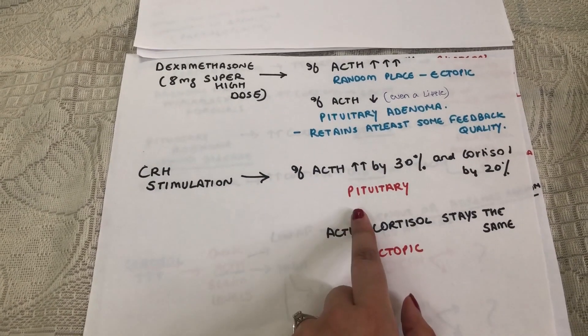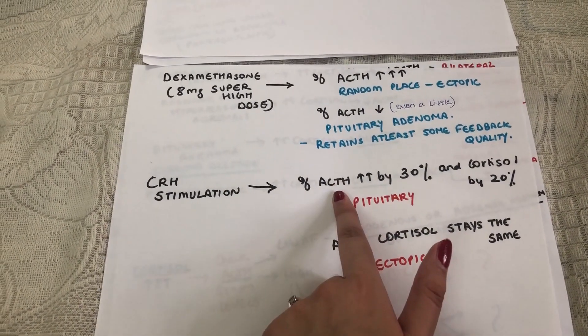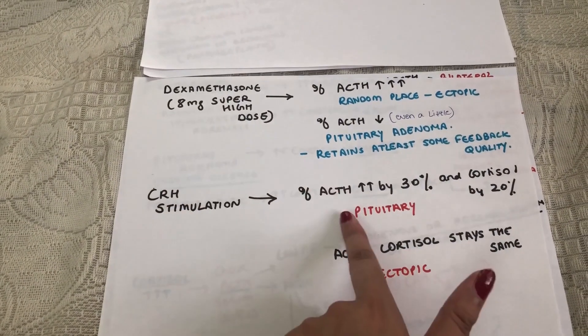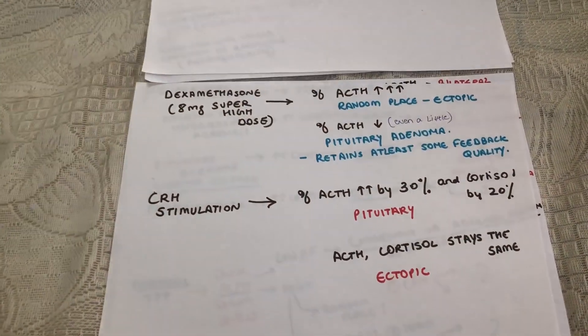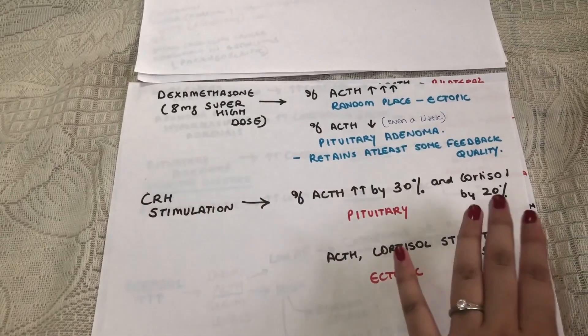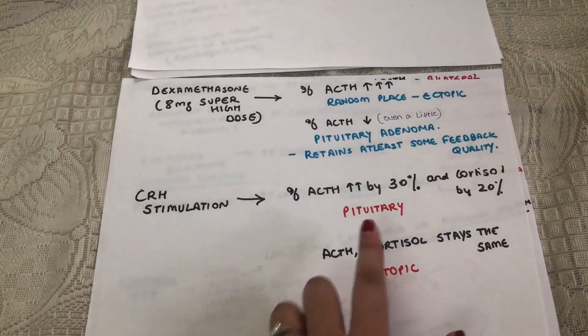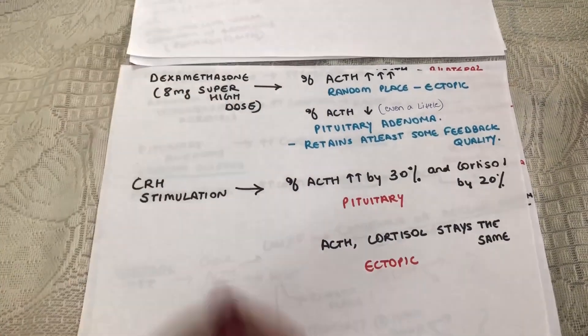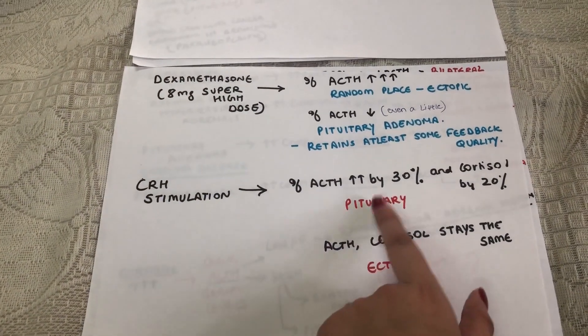However, if the pituitary is the one releasing the ACTH and you stimulate it furthermore from CRH, then the ACTH increase will be a lot, like 30% more, 20% more cortisol, and you will see a significant increase in ACTH levels. They will just spike up. That's like adding Christmas to a birthday party.